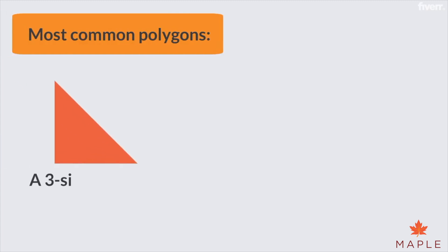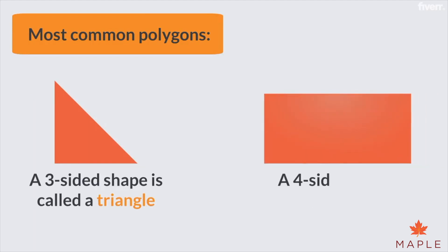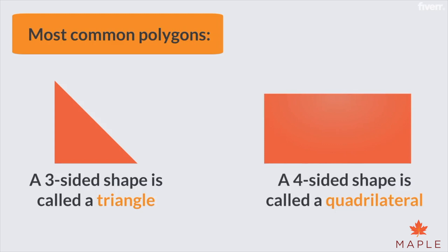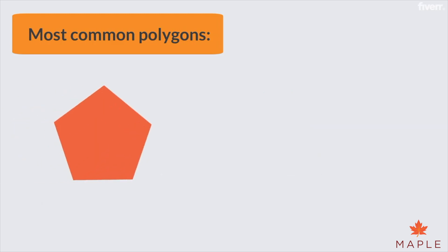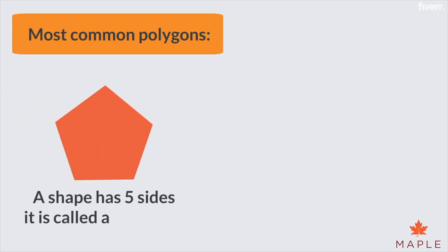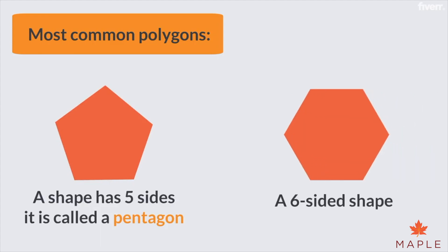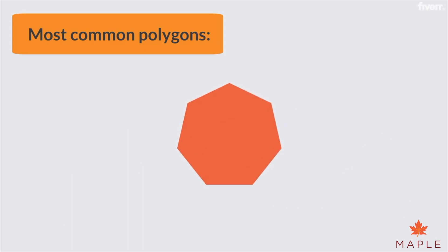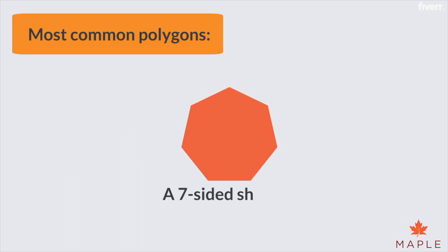Let's go over the most common polygons. A three-sided shape is called a triangle. A four-sided shape is called a quadrilateral. If a shape has five sides, it's called a pentagon. A six-sided shape is called a hexagon. A seven-sided shape is called a heptagon.